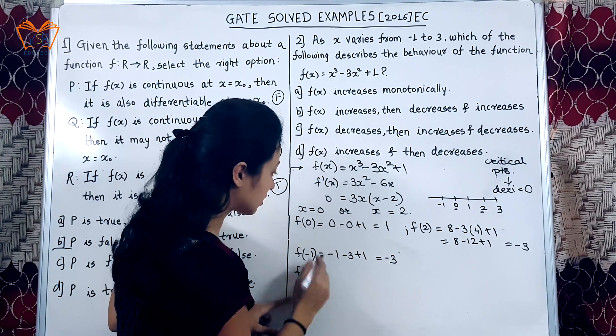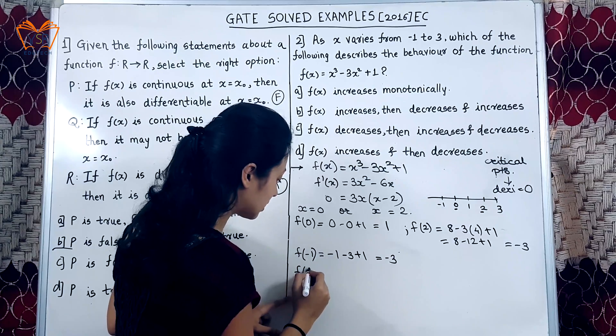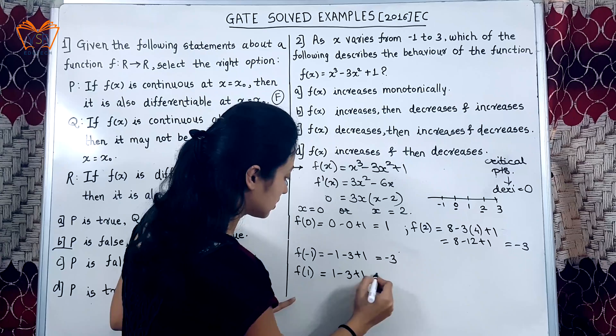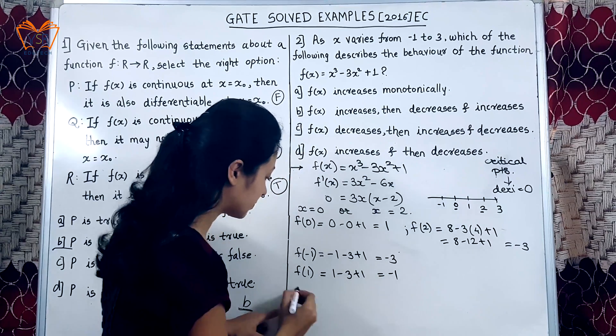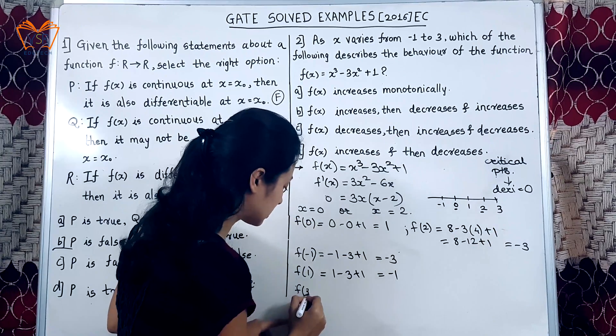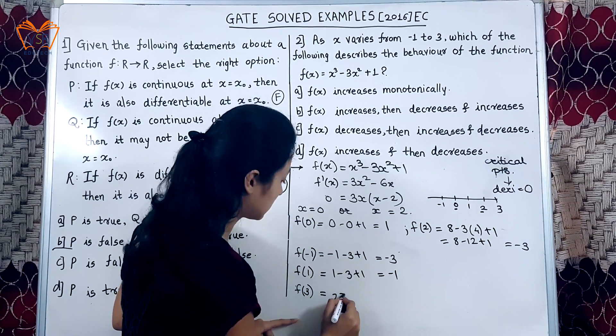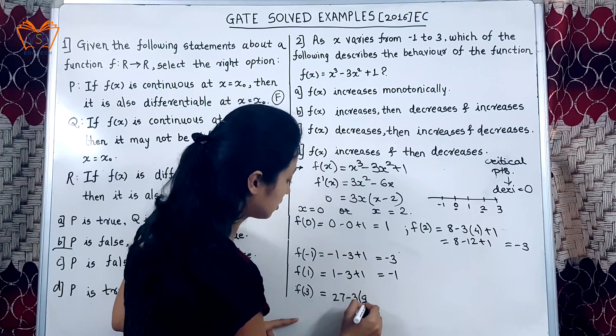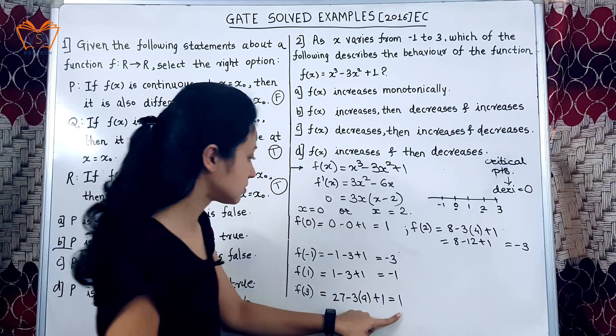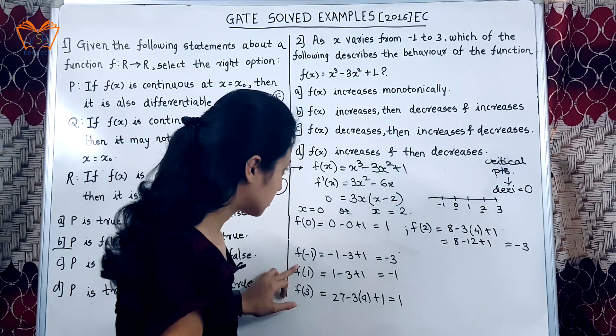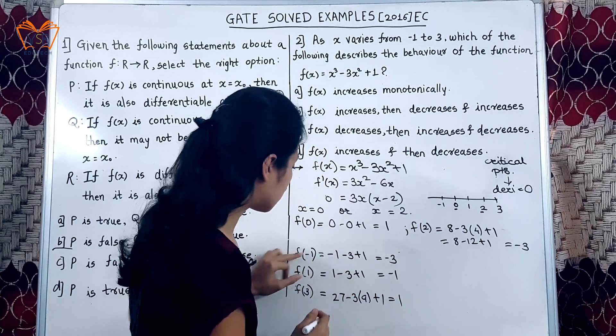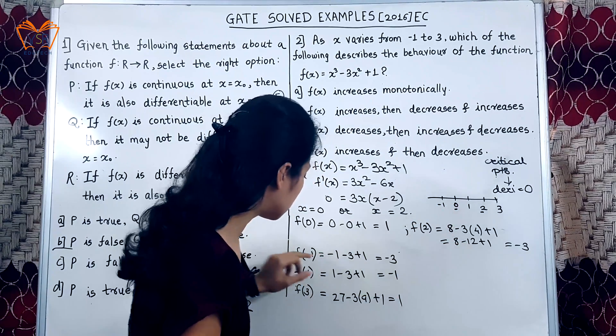And at x equal to 0 we have the value 1. At x equal to 1 this would be minus 1. And at the last point at x equal to 3 the value of function will be 27 minus 3 into 9 plus 1. So, this will get cancelled and we get 1.